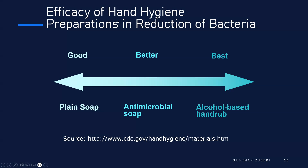Regarding the efficacy of hand hygiene preparations in reduction of bacteria — according to the CDC, from good to best: plain soap is good, antimicrobial soap is better, and best are alcohol-based hand rubs.